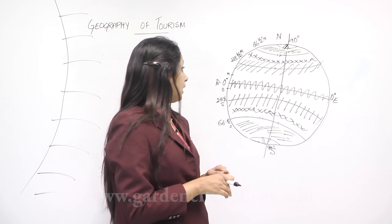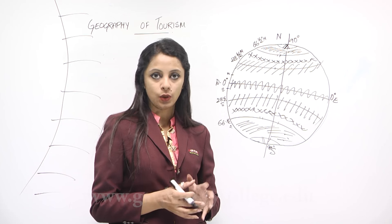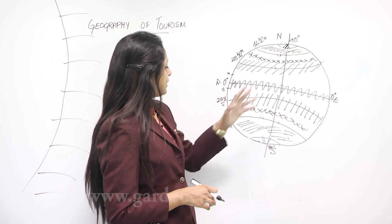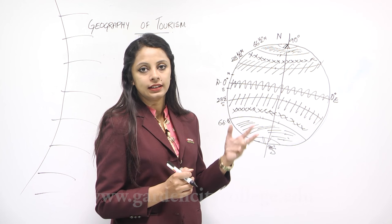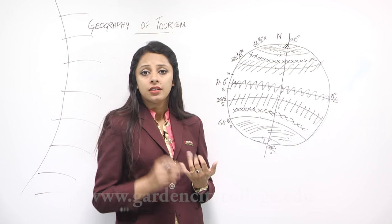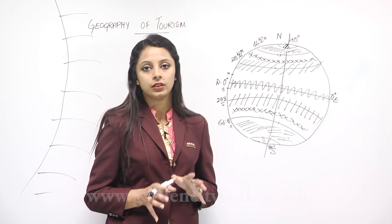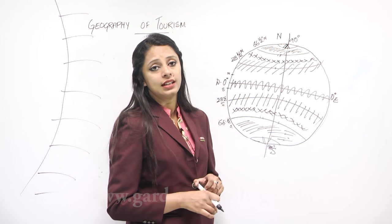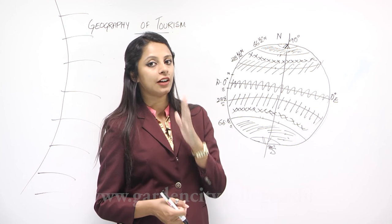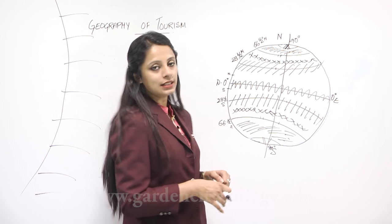The last climatic zone is the frigid zone, which lies in the polar areas — the Arctic Circle and the Antarctic Circle. There is almost no vegetation, very few animals such as polar bears and penguins, and certain tribes known as Eskimos live there. The speciality of these zones is that it is six months of day and six months of night, due to the earth's axis being tilted at 23.5 degrees.